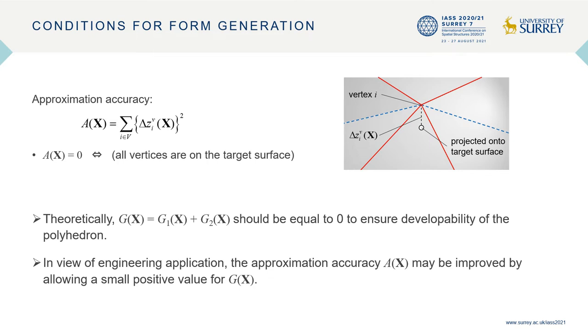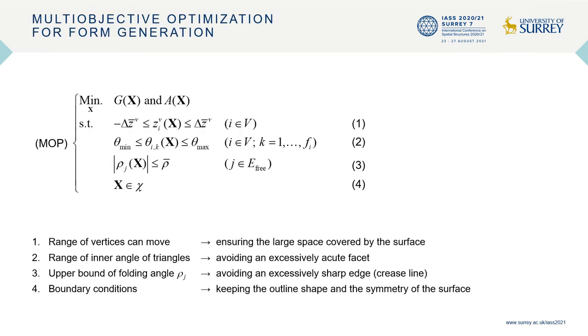On the other hand, the approximation accuracy is measured by the sum of the square distance in the normal direction between the vertices and the target surface. In view of engineering application, the approximation accuracy may be improved by allowing a small positive value for G(X). Multi-objective optimization problem is formulated as shown in the slide. The first constraint is set to ensure enough space around the surface. The second and third constraints are to avoid an excessively sharp shape. The fourth constraint is the boundary condition.